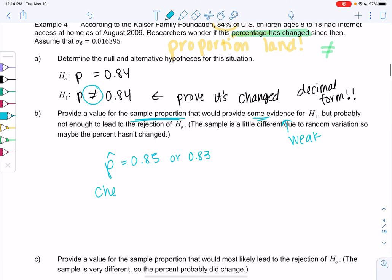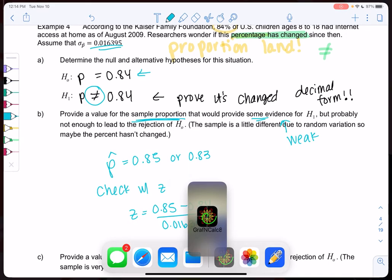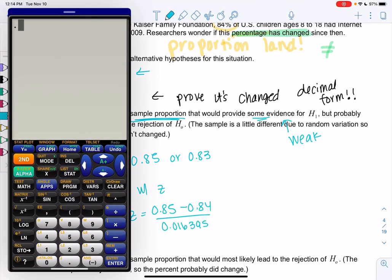But let's check with the z-score. So let's say we went with 0.85, right? There's lots of possible answers. We'll take away the 0.84, the average proportion. And then we'll divide by the standard deviation. 0.016395. Go ahead and calculate that.